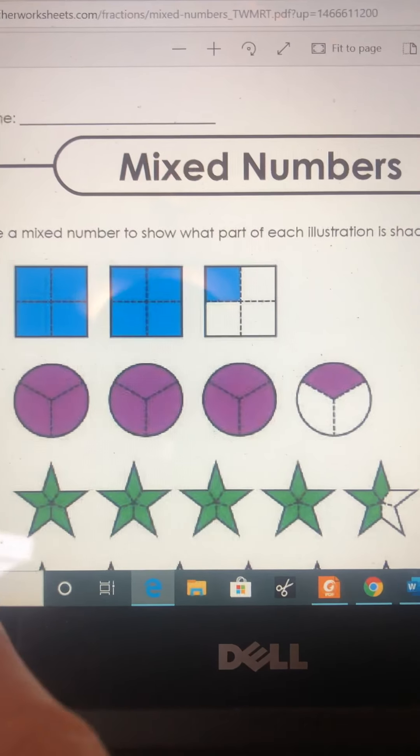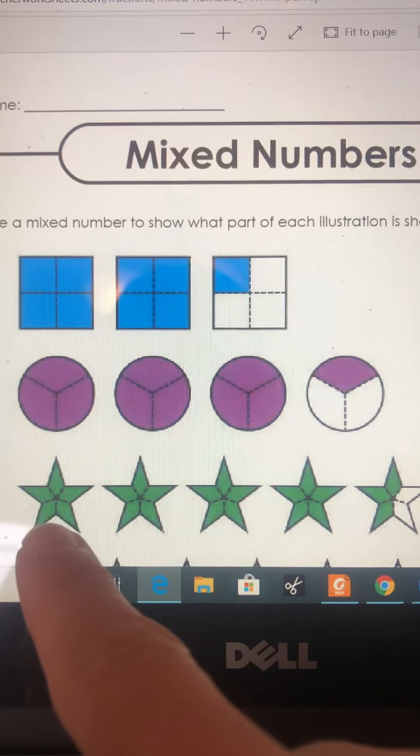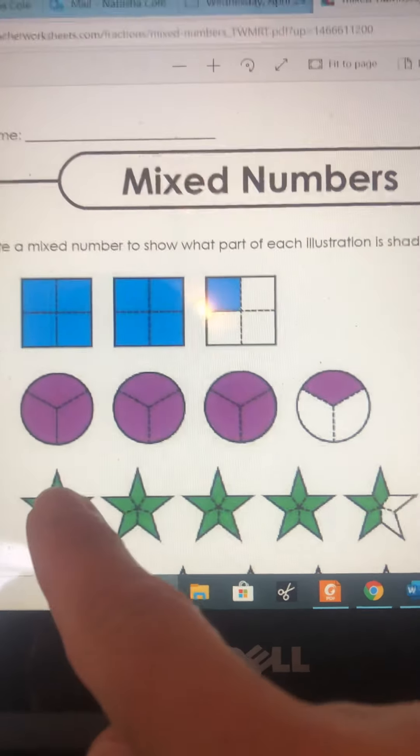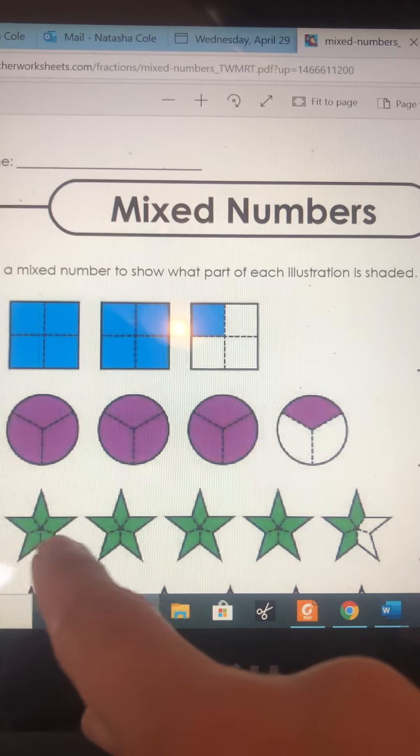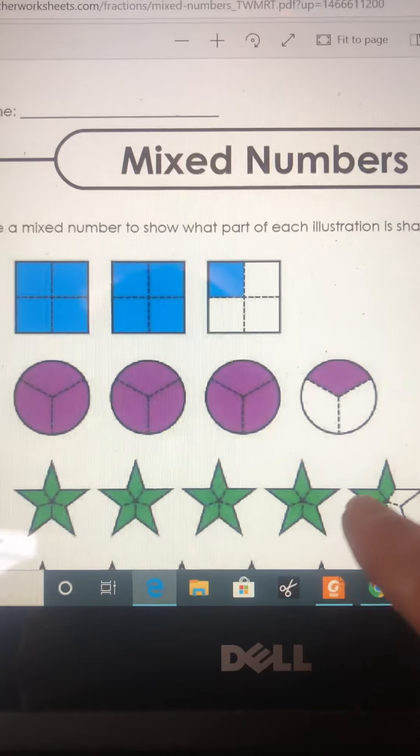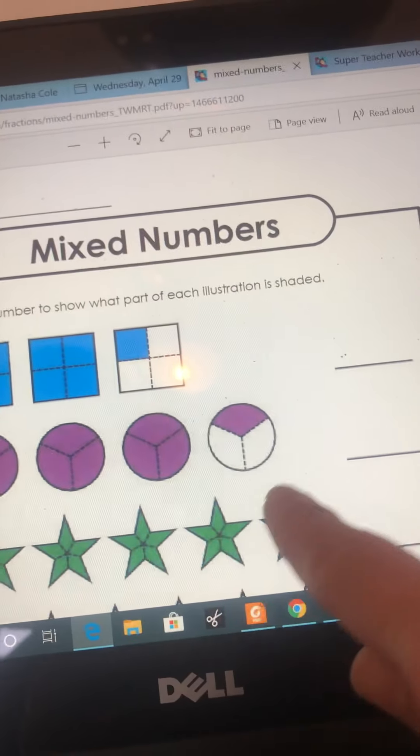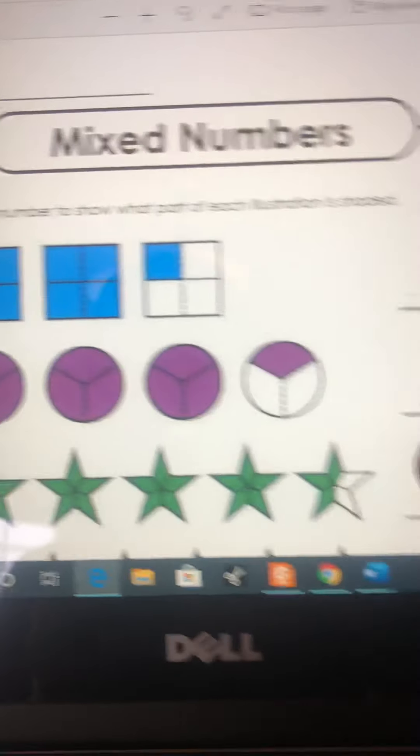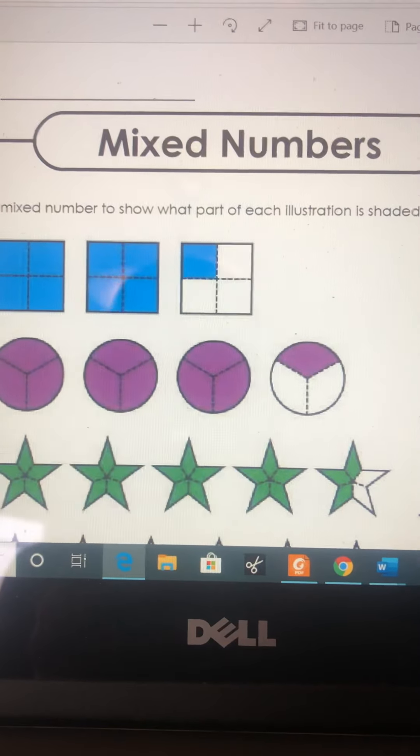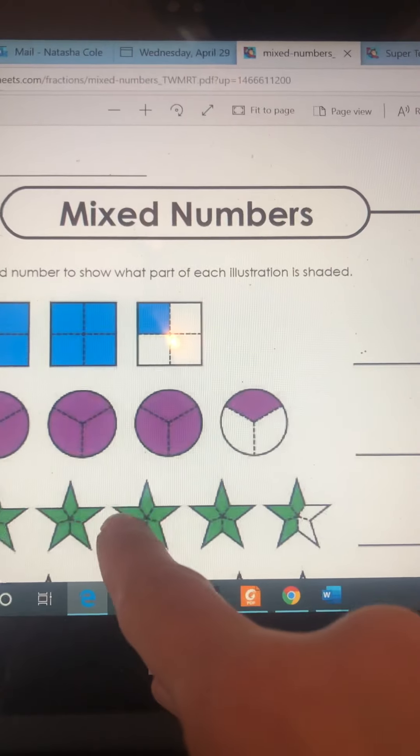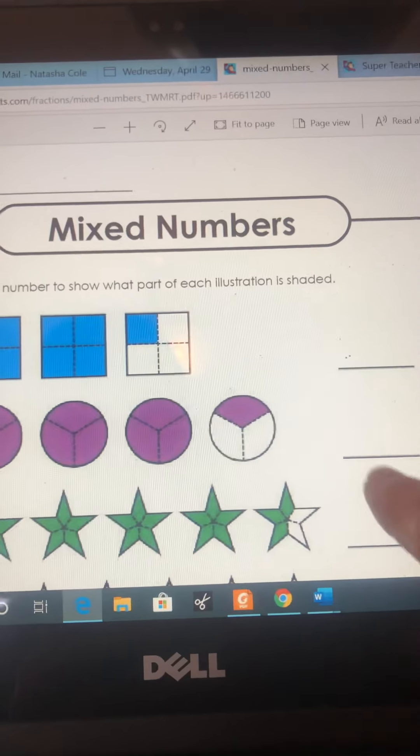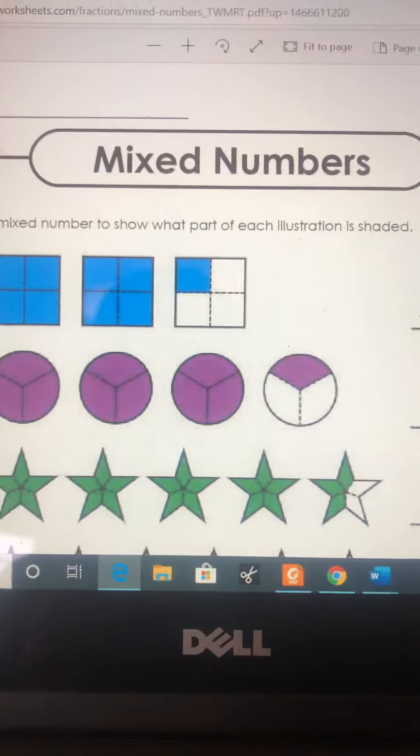For this, the improper fraction, we can see that the stars are one, two, three, four, five, so they're fifths. So the improper fraction would be five, ten, fifteen, twenty, twenty-three. Twenty-three fifths would be the improper. The mixed would be one, two, three, four, so it would be four and three-fifths.